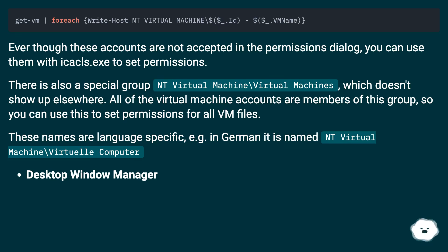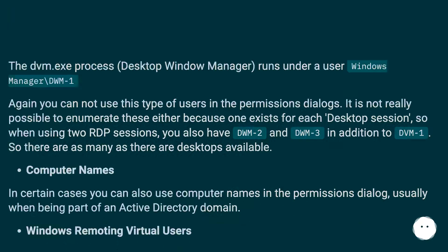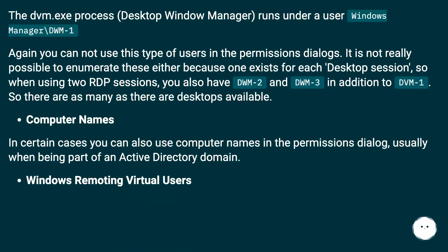On Server 2008+ and Windows 8+, Hyper-V virtual machines each create their own virtual account which looks like NT Virtual Machine\[VMID]. There is also a special group NT Virtual Machine\Virtual Machines which doesn't show up elsewhere — all virtual machine accounts are members of this group, so you can use it to set permissions for all VM files. Note these names are language-specific; in German it is named NT Virtueller Computer. Desktop Window Manager: the dwm.exe process runs under a user Window Manager\DWM-1. You cannot use this type of user in permissions dialogues.